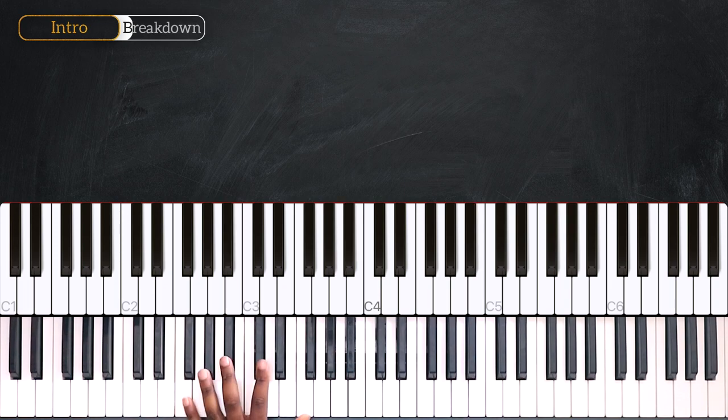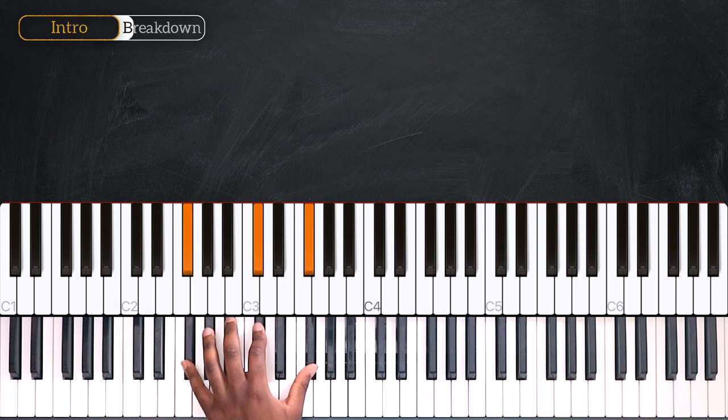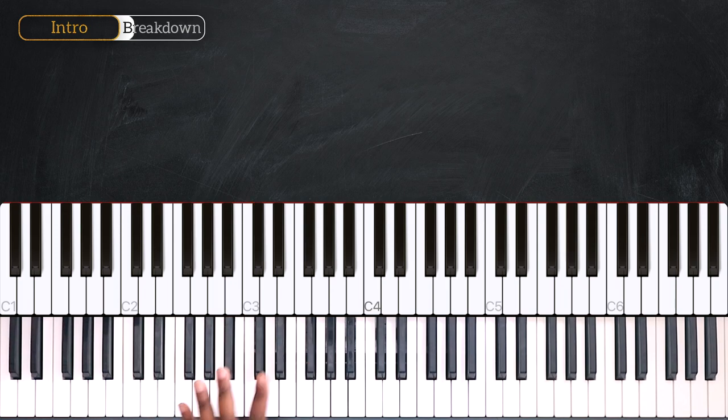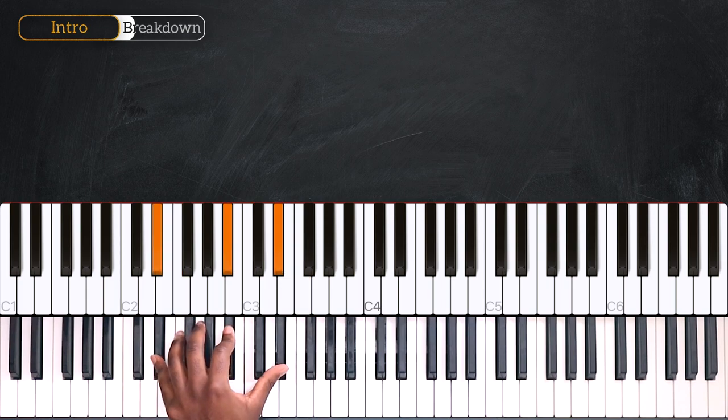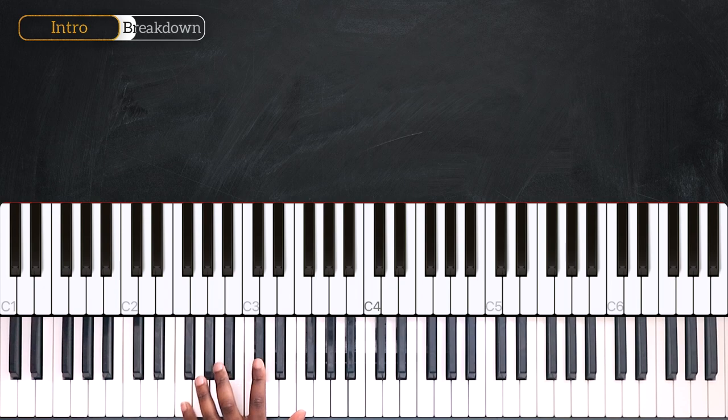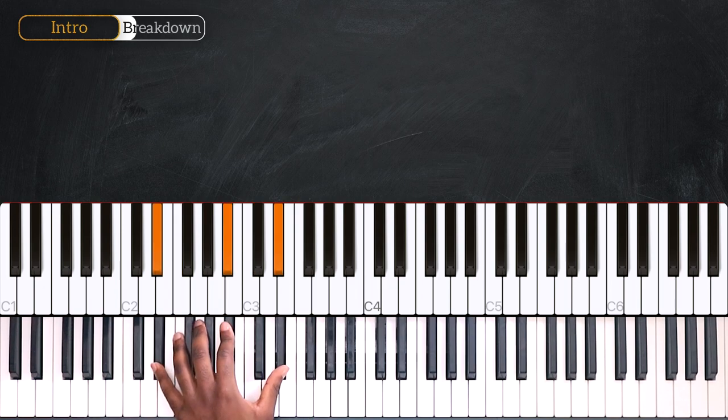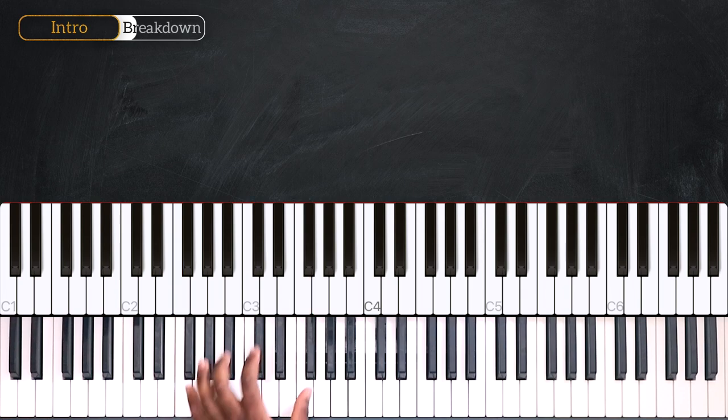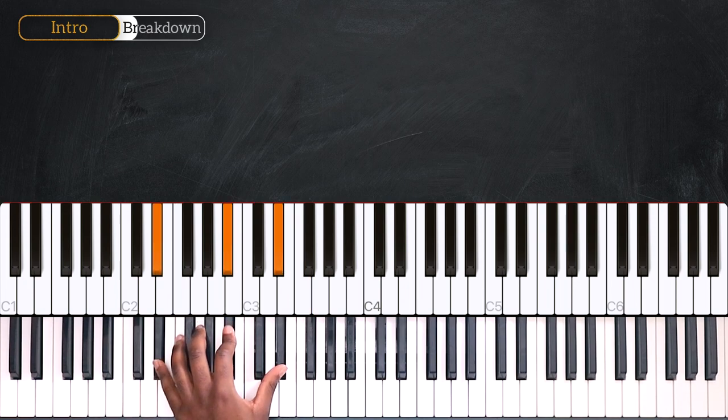So for the left I'm playing F, Db and F. So that's Db over F. Going up, Db and F on Gb. Gb, Db and Gb again. Back to Db over F. Going down on Eb minor. Eb, Bb and Eb.